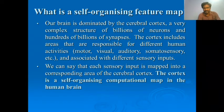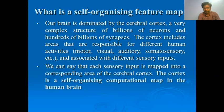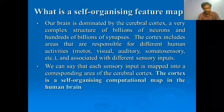The functionality is analogous to our brain, which is dominated by the cerebral cortex — a very complex structure of billions of neurons and hundreds of billions of synapses. The cortex includes areas responsible for different human activities like motor, visual, auditory, and somatosensory functions, each associated with different sensory inputs. Each sensory input is mapped to a corresponding area of the cerebral cortex.